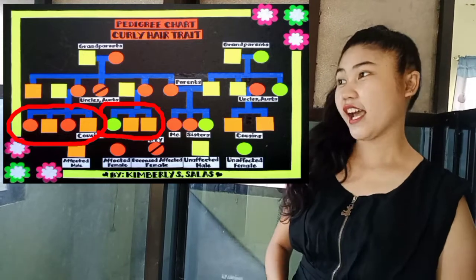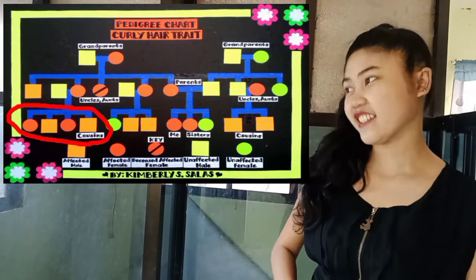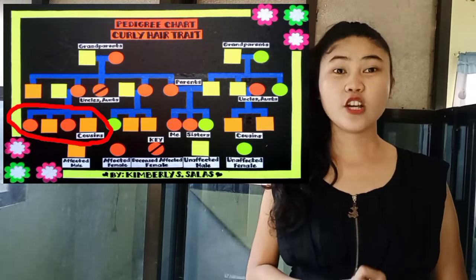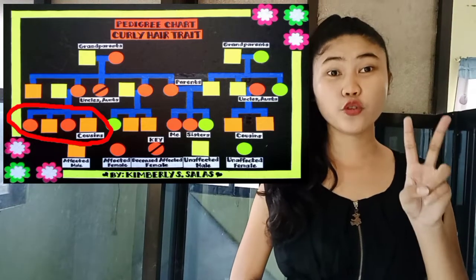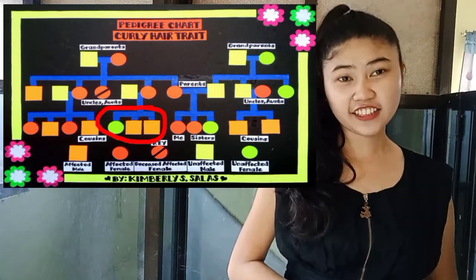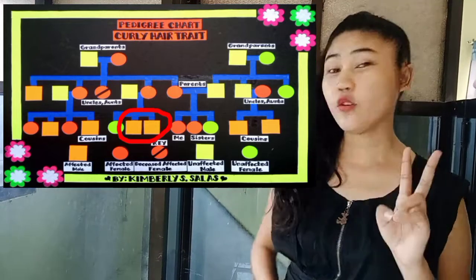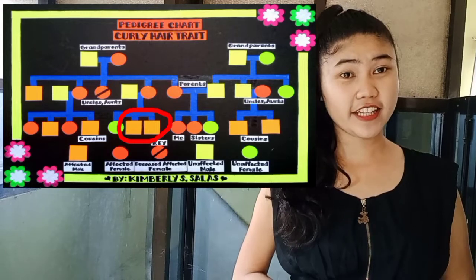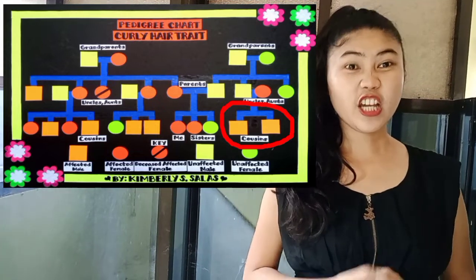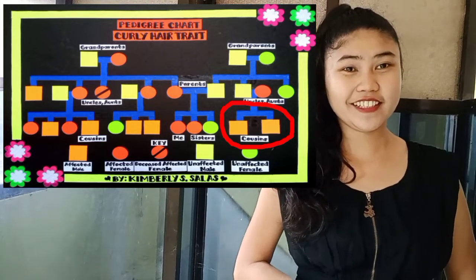These are my uncles and aunts' children, or my cousins, from my mother's side. As we can see, these four cousins of mine are all affected with the curly hair trait — two females and two males. However, from my other uncle and aunts, one female is unaffected with the trait, while the other two males possess the curly hair trait. On the other hand, these are my cousins from my father's side, in which two males are affected with the curly hair trait.